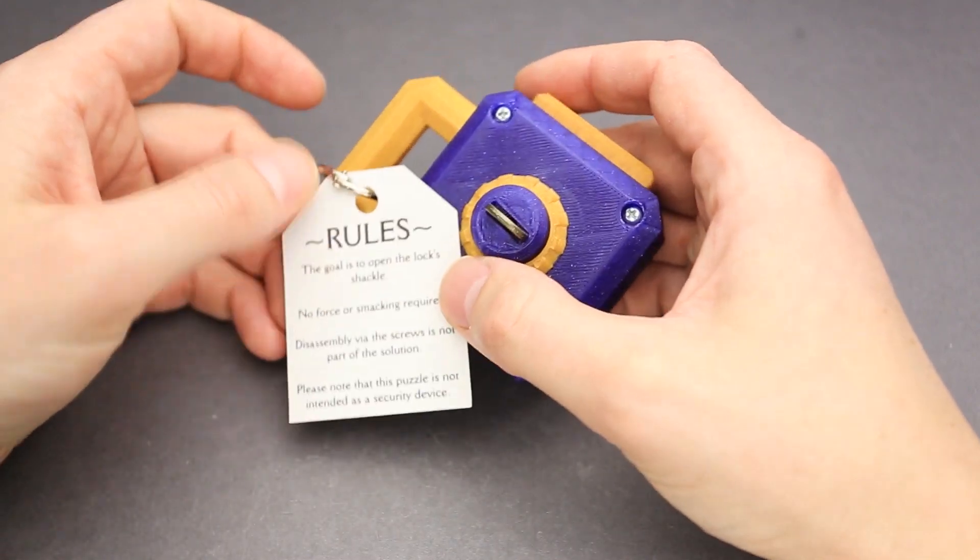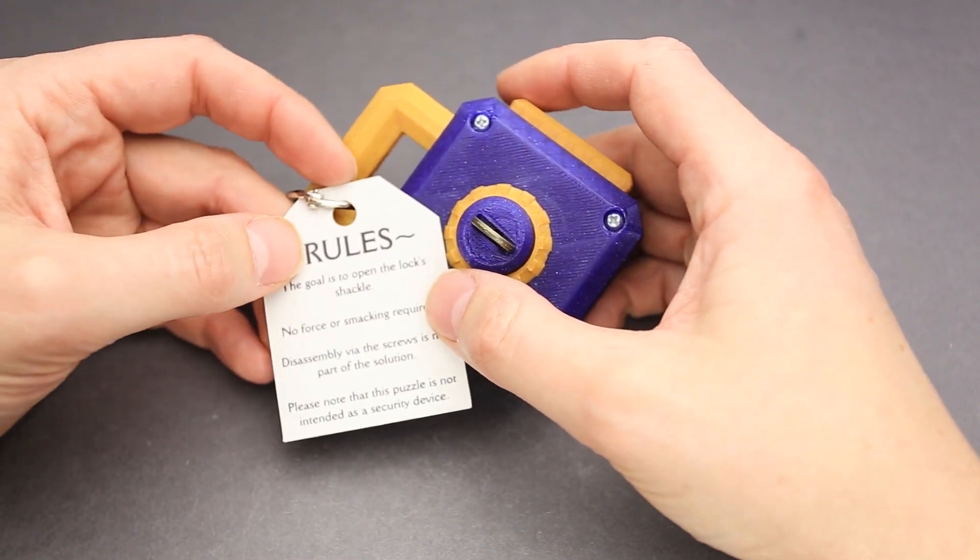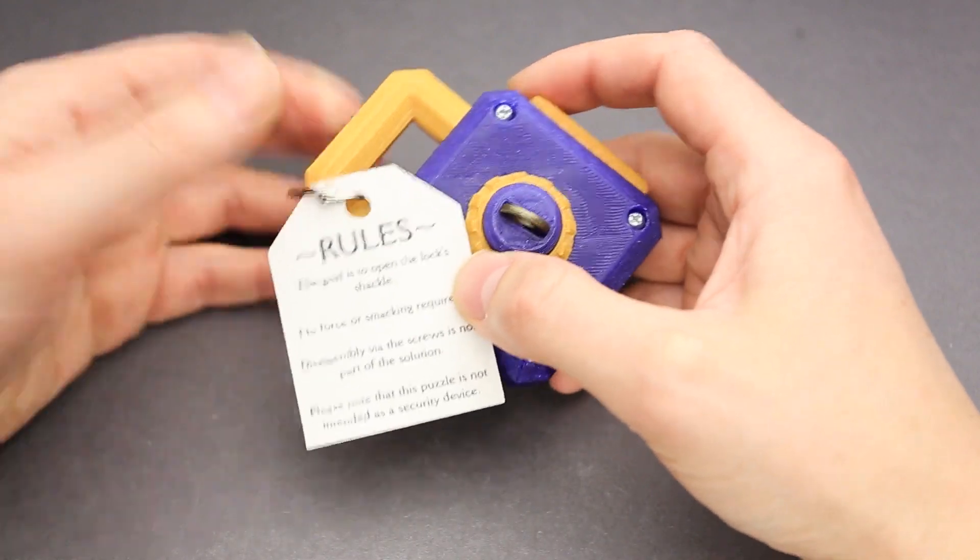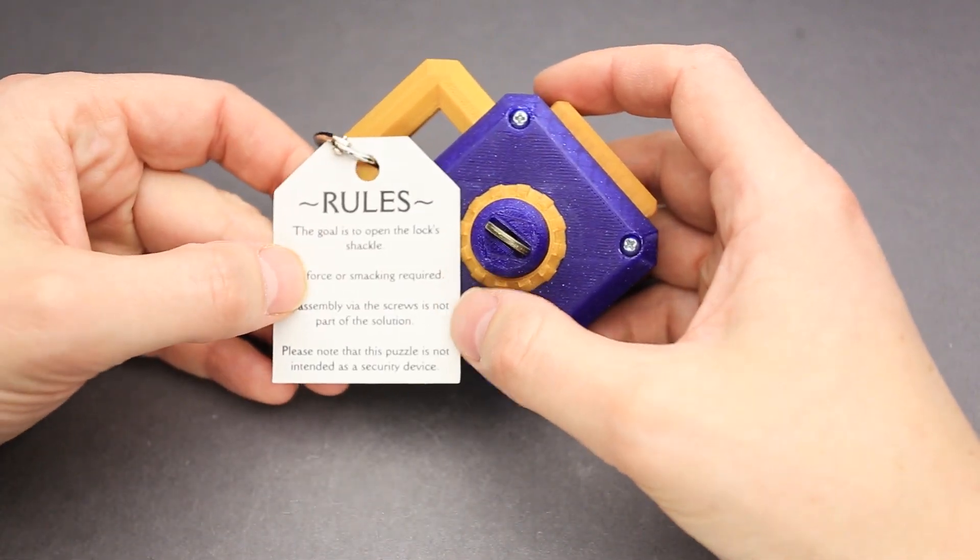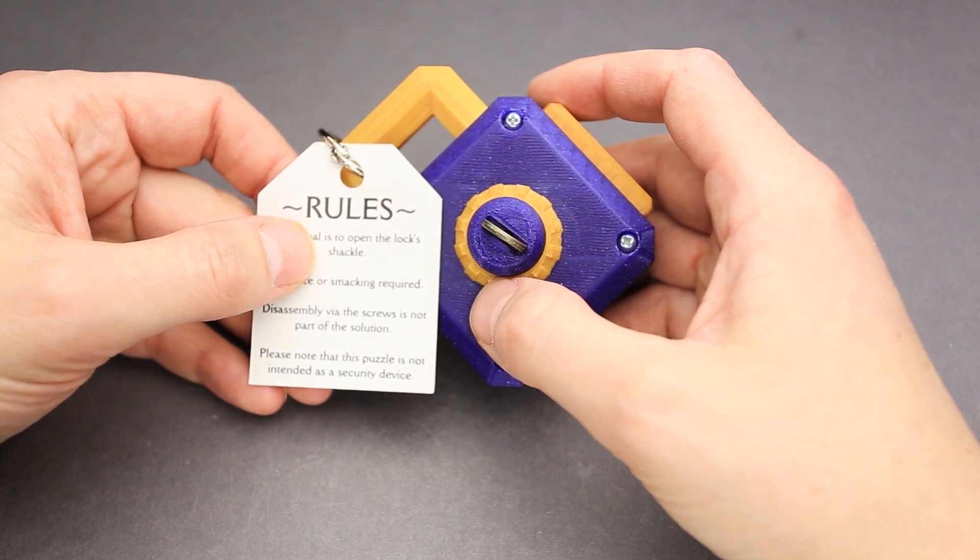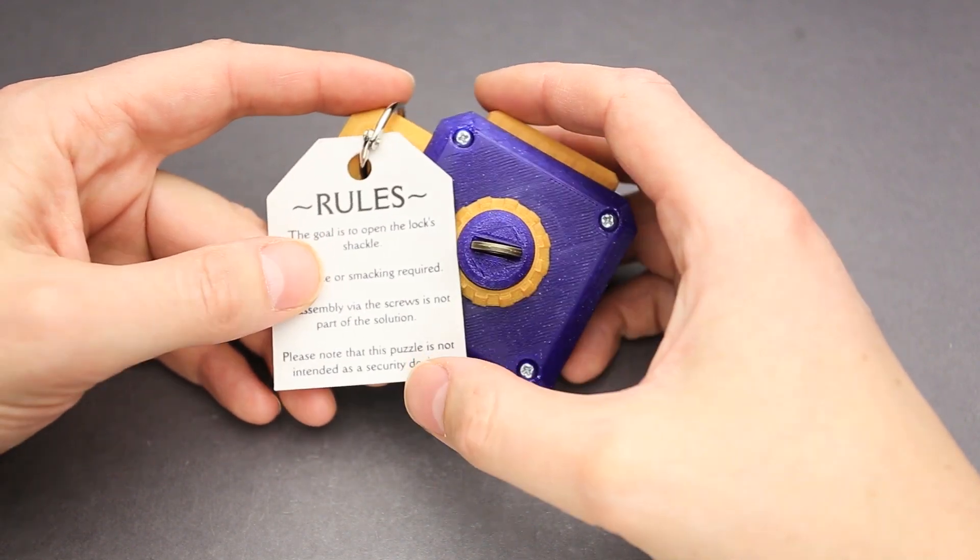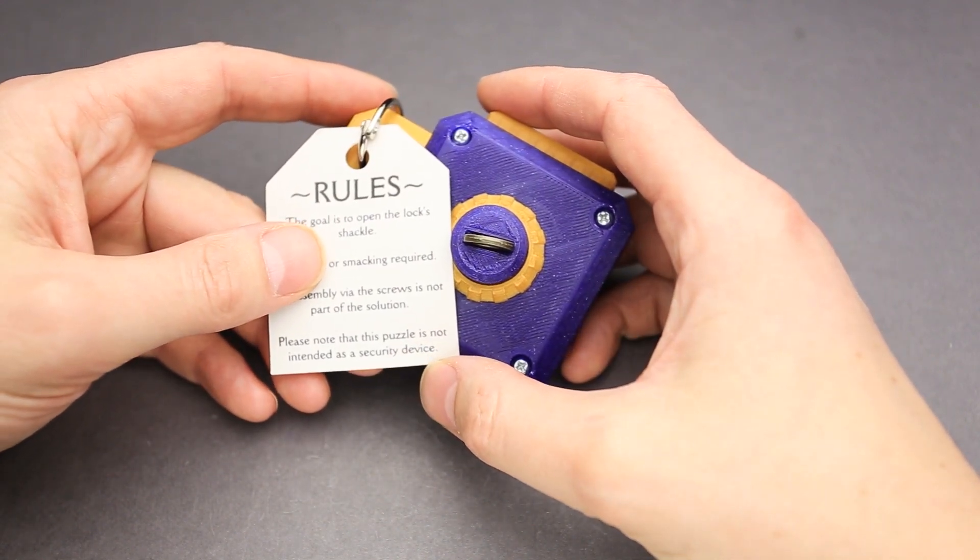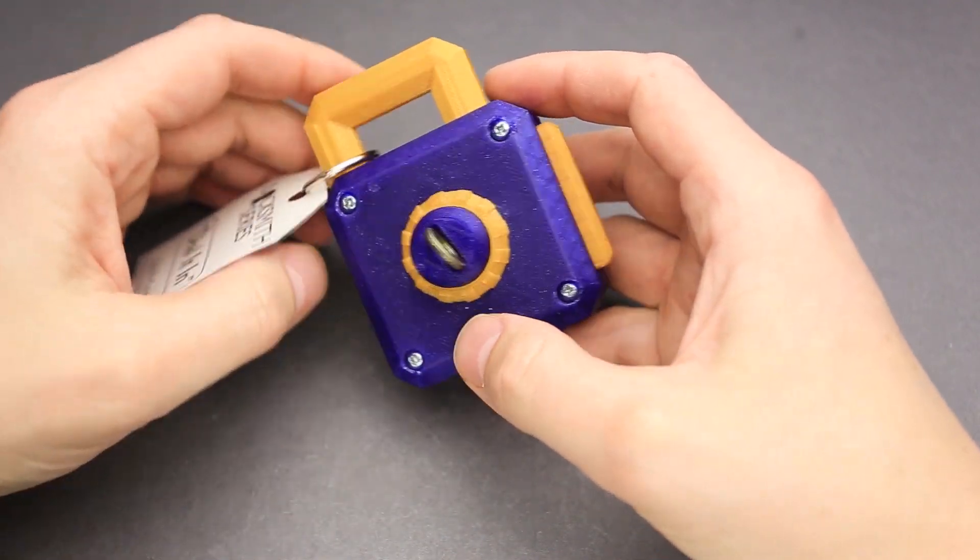The rules of the puzzle are following. The goal is to open the lock shackle. That's kind of a standard rule. No force or smacking required. Disassembly, where the screw is not a part of the solution. That's pretty obvious. Please know that this puzzle is not intended as a security device. And that's kind of obvious as well.